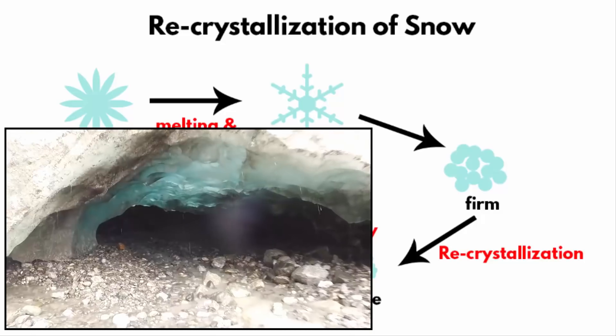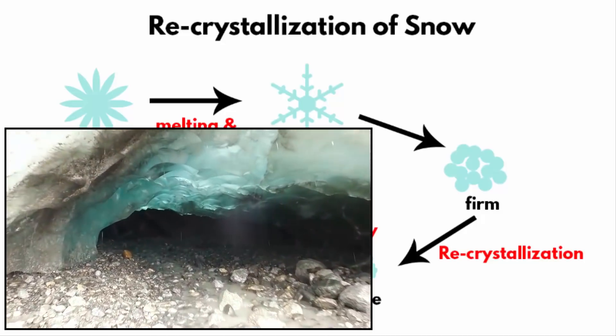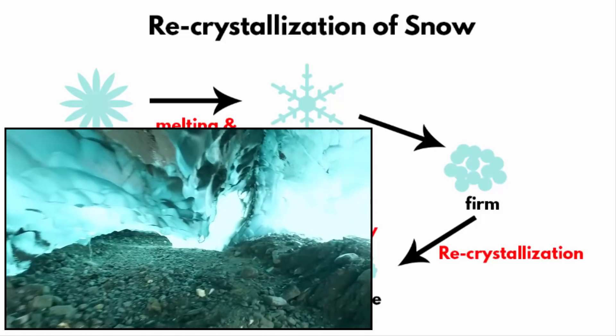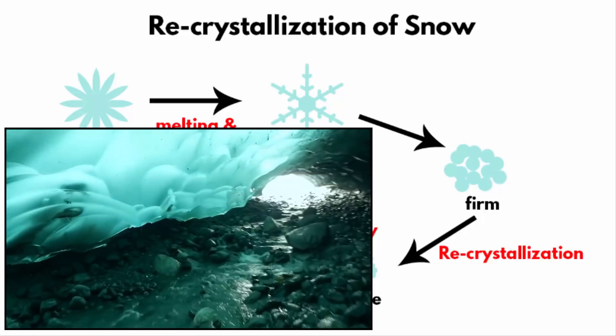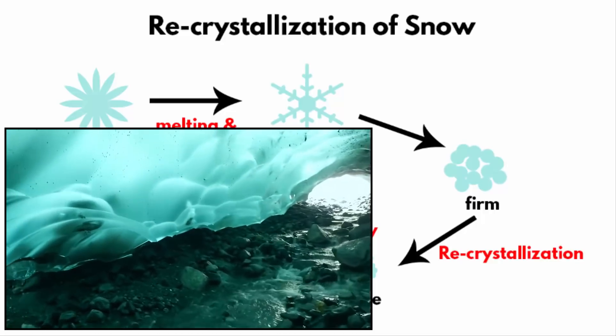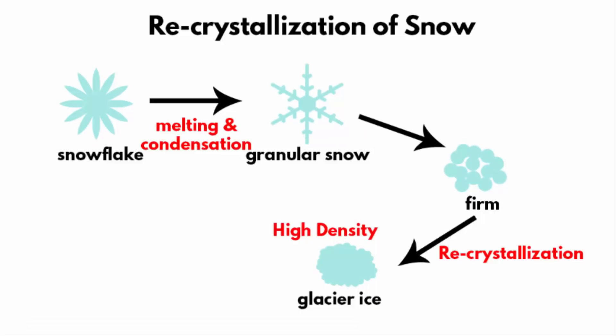If you go underneath a glacier, you will notice that the bottom layer slowly melts. Most of that water recrystallizes and forms like a rock.